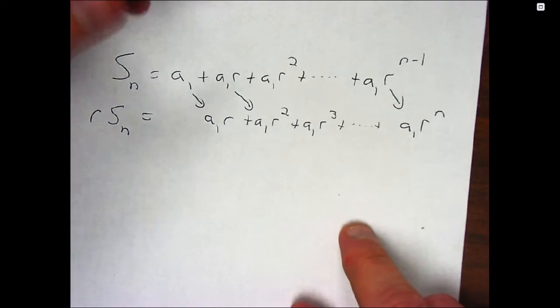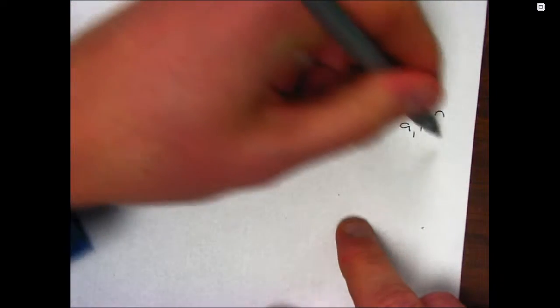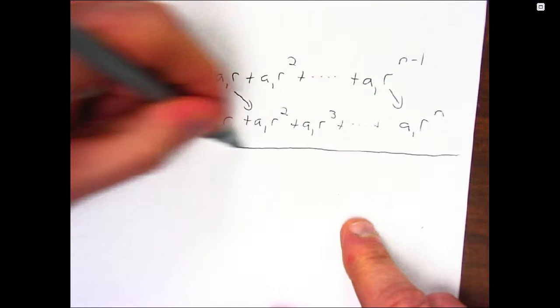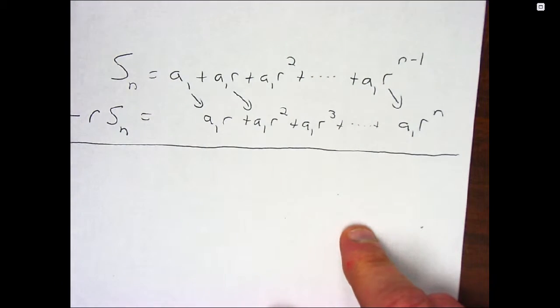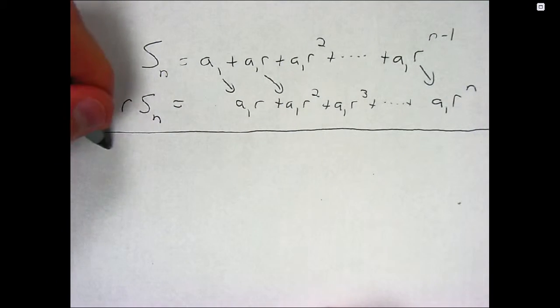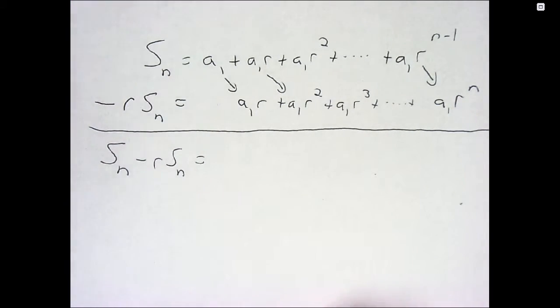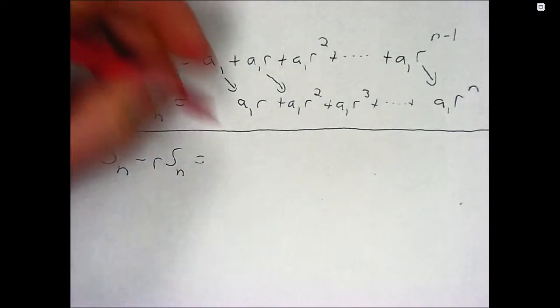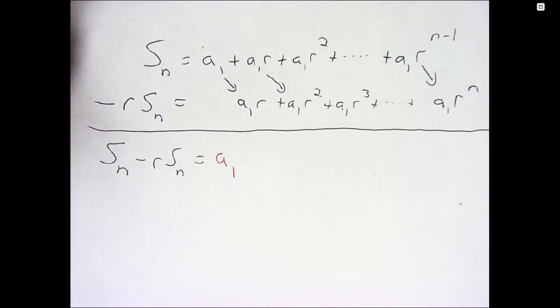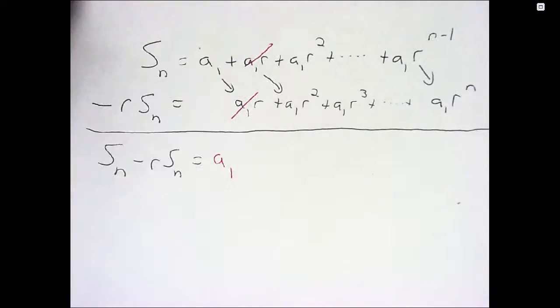And why does this help me? Well, it helps me because now both of these lists have basically the same things in them. And so if I subtract, on the left-hand side, I'm going to have that sum, which I want, minus r times the sum. And on the right side, I get a bunch of canceling. And there's nothing to cancel the a sub 1 out. So I'm going to get a sub 1. But then these two are going to cancel when I subtract.